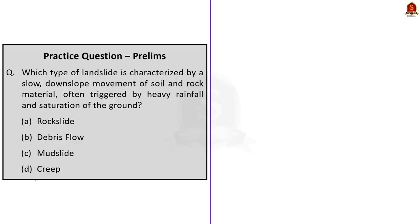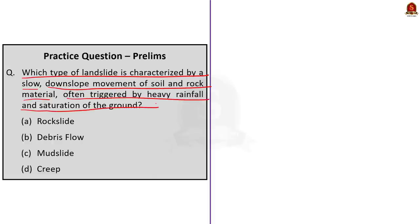The final question asks: which type of landslide is characterized by a slow downslope movement of soil and rock material, often triggered by heavy rainfall and saturation of the ground? The correct answer is option D — creep.